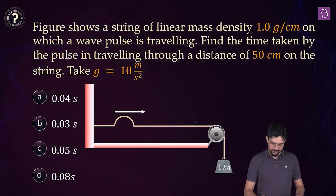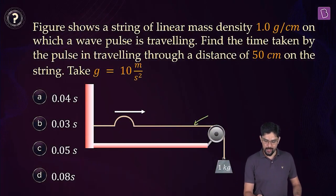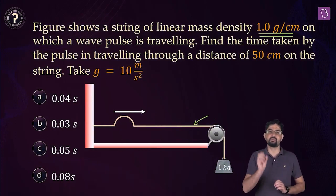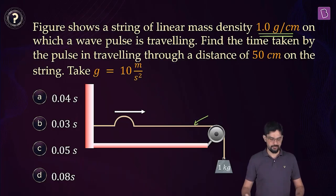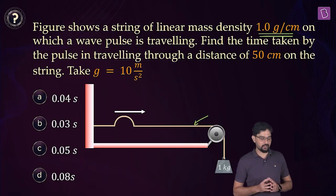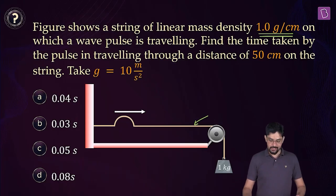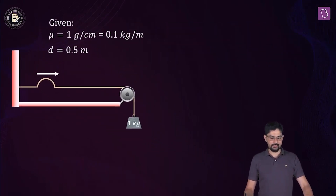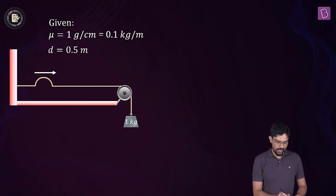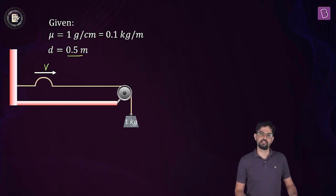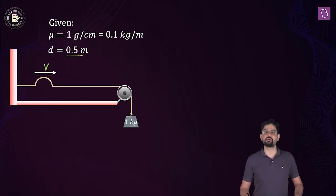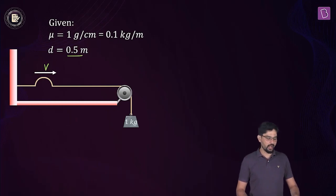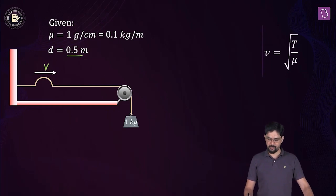The string in the diagram has a uniform linear mass density of 1 gram per centimeter, meaning in each centimeter of this string the mass is 1 gram. You have to find the time taken by the pulse traveling through a distance of 50 centimeters. The linear mass density in SI units is 0.1 kg per meter, and the distance the wave travels is 0.5 meters. We use the formula: distance equals speed times time, and find wave speed using square root of T divided by mu.